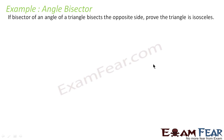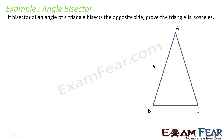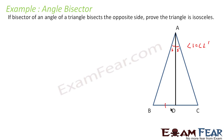Let's take one more example. If the bisector of an angle of a triangle bisects the opposite side, we have to prove that the triangle is isosceles. Let's draw triangle ABC. We take angle A and draw its angle bisector, where angle 1 equals angle 1-dash. The bisector meets BC at D such that BD equals DC.